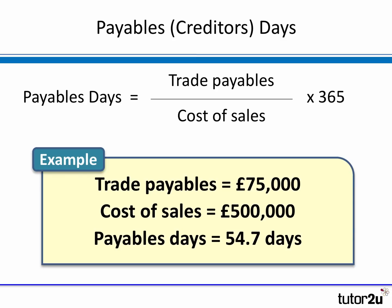The payables days calculation is very similar to receivables days. You simply take the trade payables — the amount owed to creditors from the current liabilities — and divide it by cost of sales, which represents how much has been spent with those suppliers, then multiply by 365. For example, if at the balance sheet date you owed suppliers £75,000 and spent £500,000 during the year with those suppliers, then £75,000 ÷ £500,000 × 365 = 54.7 days to pay trade creditors on average.